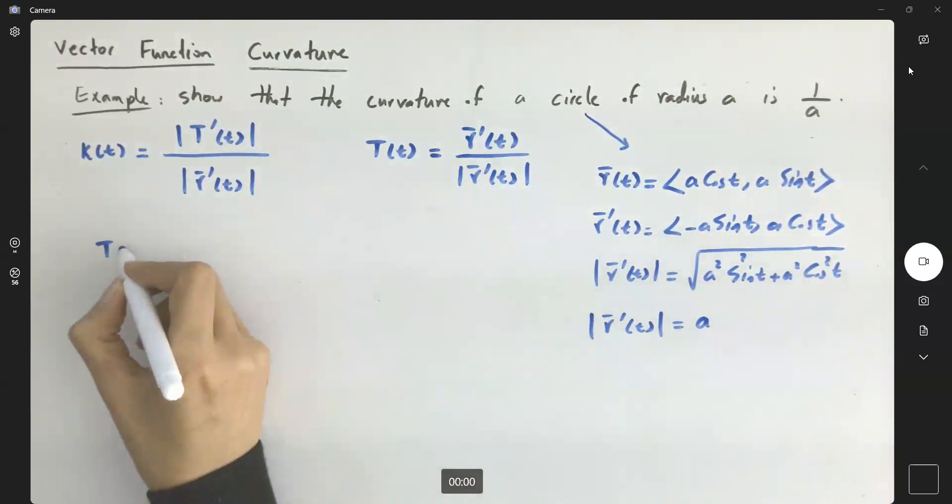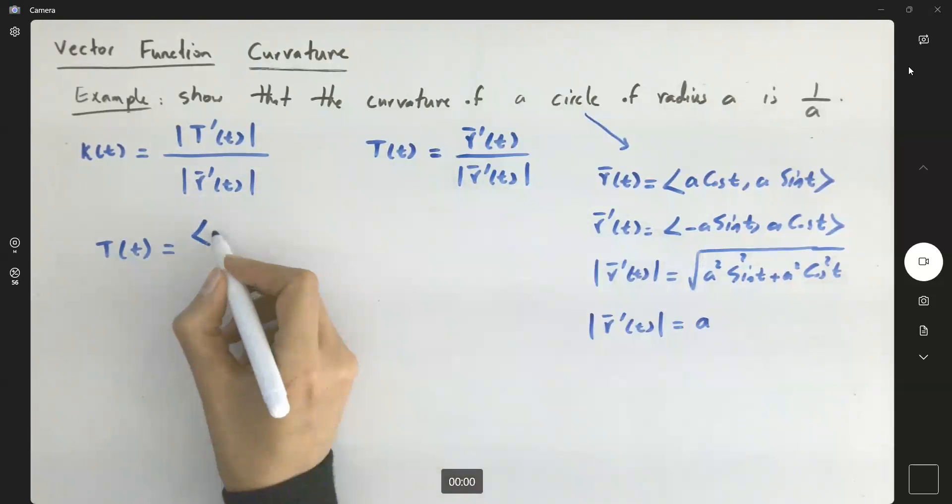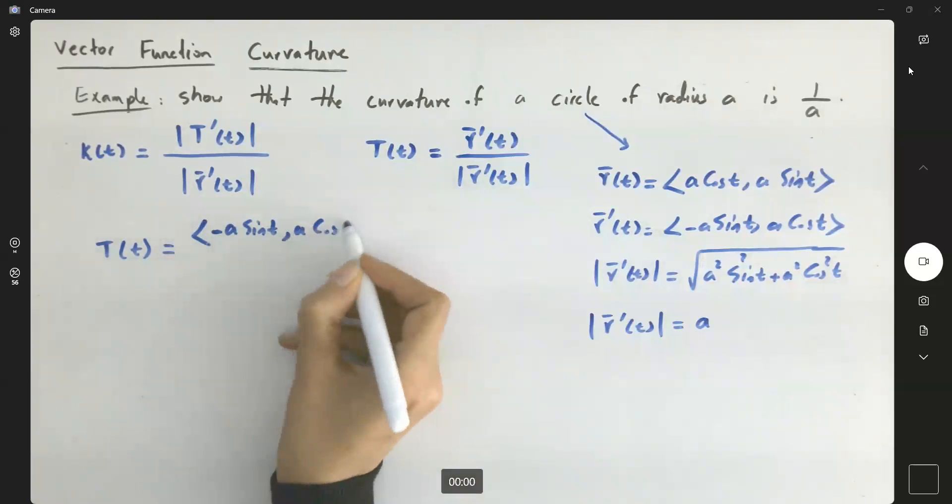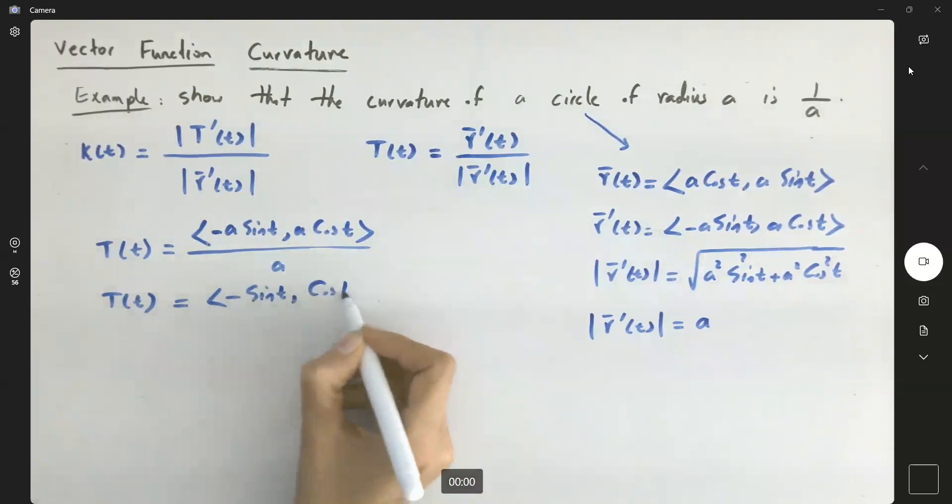So, so far we found that the unit tangent vector is equal to negative A sine T and A cosine T divided by A, or T of T becomes negative sine T and cosine T. Very good.